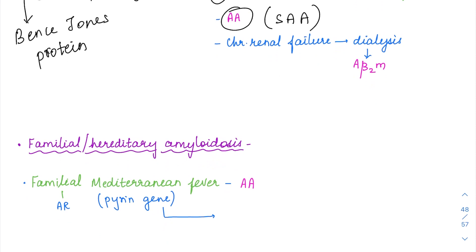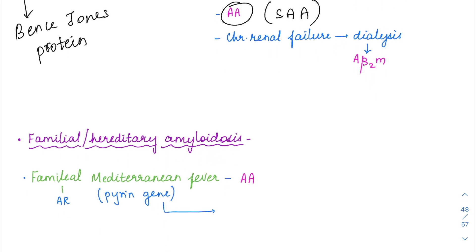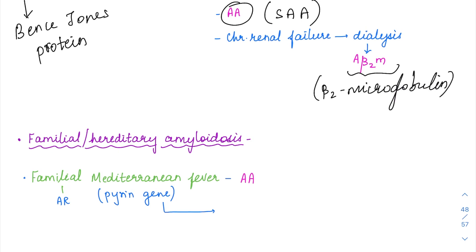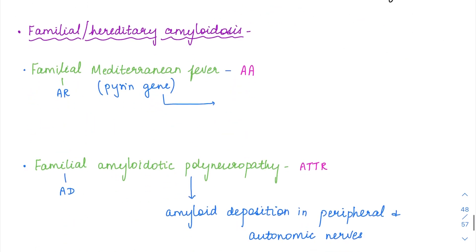In chronic renal failure there is a special type of amyloid called A-beta-2 microglobulin, represented as Aβ2 microglobulin. This is a post-dialysis amyloid that accumulates especially in the joints, particularly the hand and wrists.